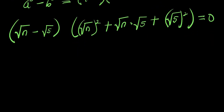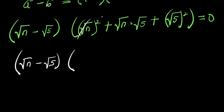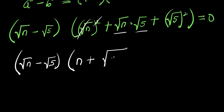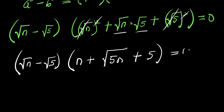Applying these values, we have square root of n minus square root of 5, times the quantity: square root of n squared plus square root of n times square root of 5 plus square root of 5 squared, which simplifies to n plus square root of 5n plus 5, and this equals 0.